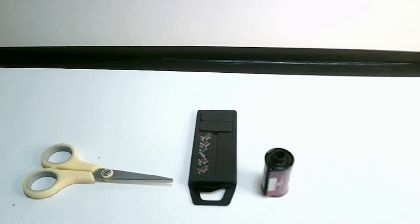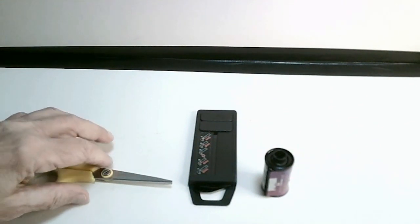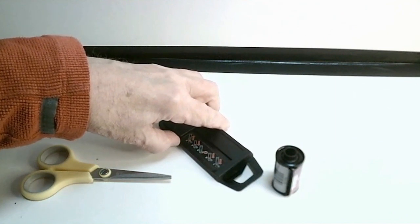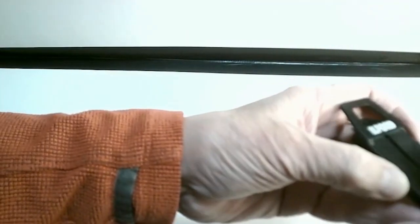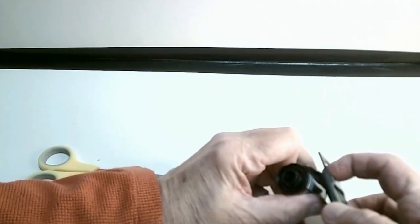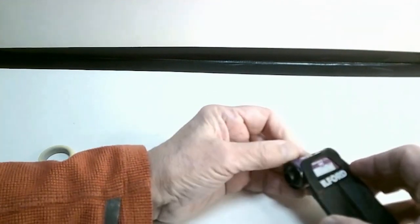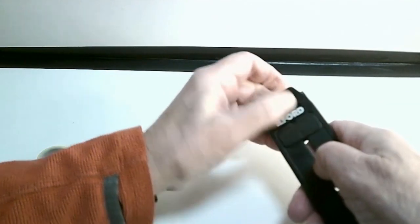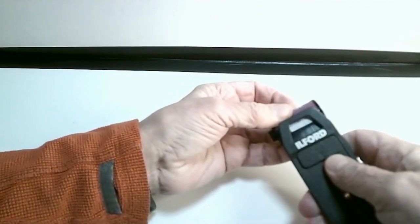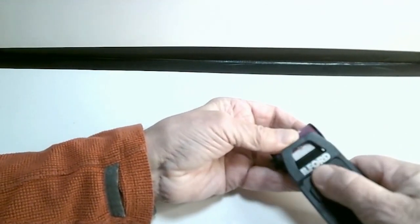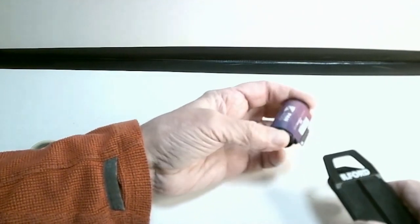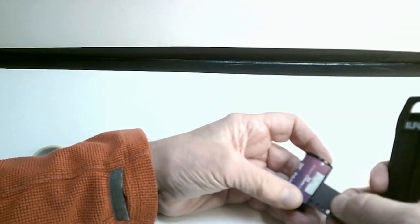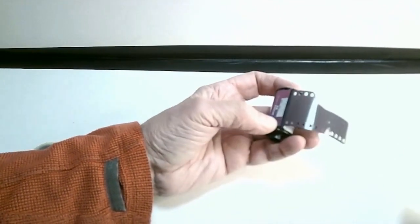Right, well I now have the three items I need to start the process, which is a pair of scissors and the film, but a bit of importance is this device for getting the film out of the canister. The process for this is you place it up against the film like so and push up the outer piece which pushes a piece into the film.